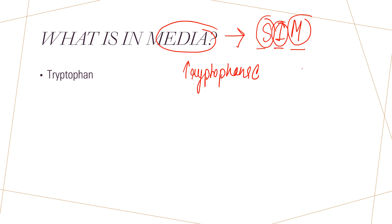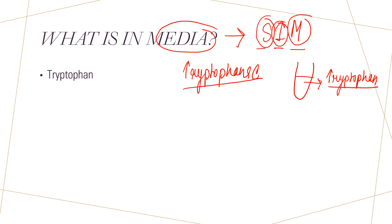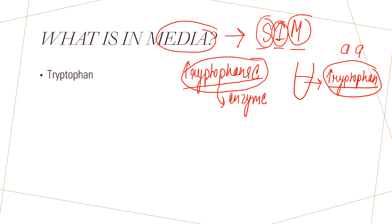This is a biochemical test performed in a test tube. In the test tube there is an amino acid called tryptophan. Be careful — tryptophan is the amino acid and tryptophanase is the enzyme. The tryptophanase enzyme will convert tryptophan into indole, and that is why this test is known as the indole test.